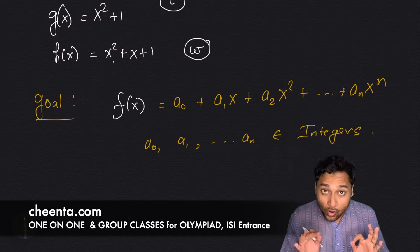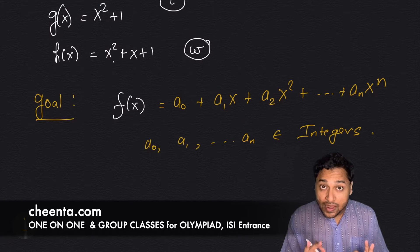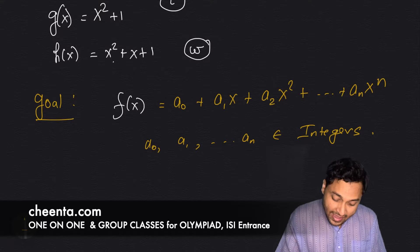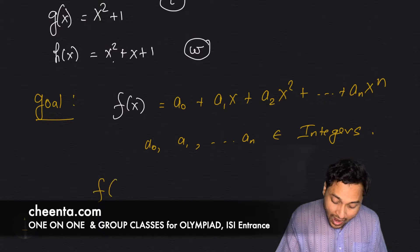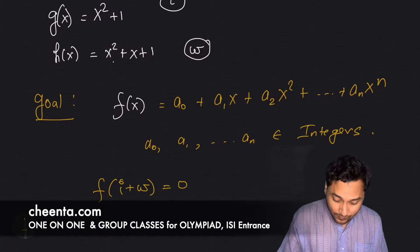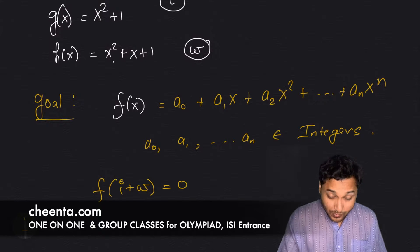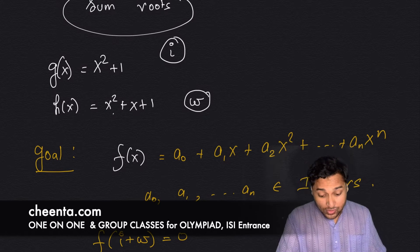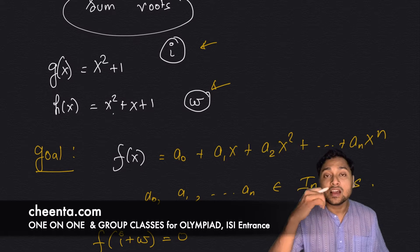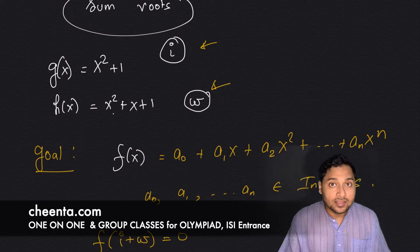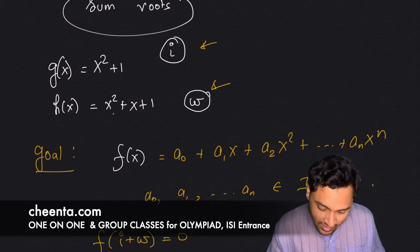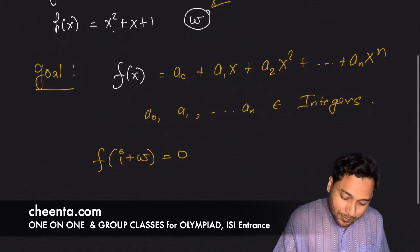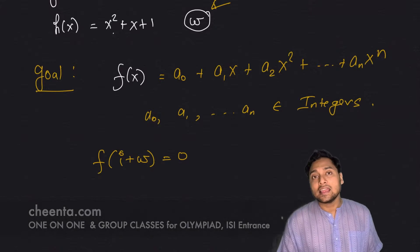Such that a₀, a₁, and all coefficients are integers, and we need f(i + omega) = 0 — meaning the sum of the two roots of the previous polynomials must be a root of this one. You can pause the video and give it a try.